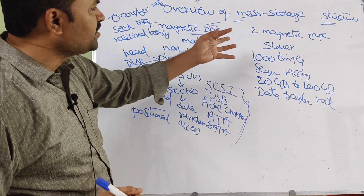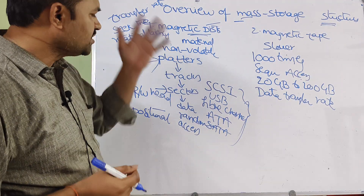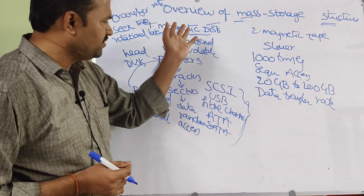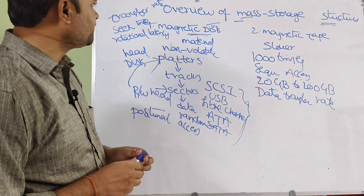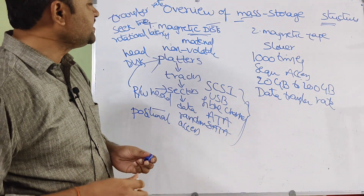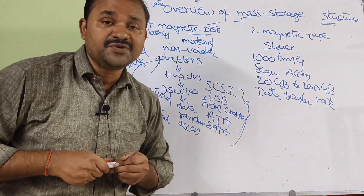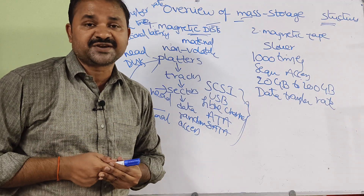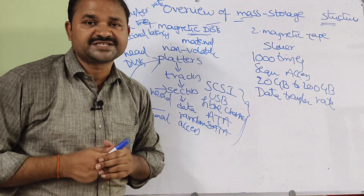Nowadays we are not using magnetic tape anymore. In the olden days, we used magnetic tape. This concludes the overview of mass storage structures, also known as secondary storage structures.